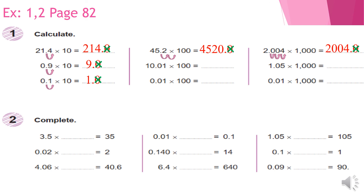Please complete the others. In exercise number two we have to complete: 3.5 times how many equals 35? We move the point one step, so we multiply by 10. Excellent. The second one: 0.02 times how many equals 2? We move the point two steps to the right side, so we multiply by 100. Excellent. The last one: 4.06 times how many equals 40.6? We move the point one step to the right side, so we multiply by 10. Excellent.